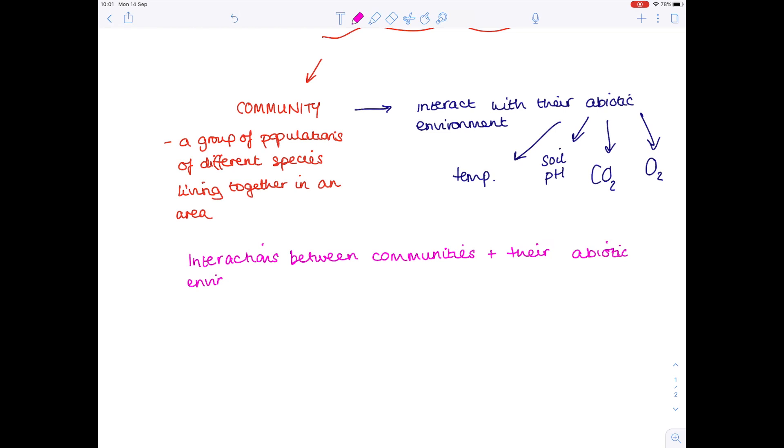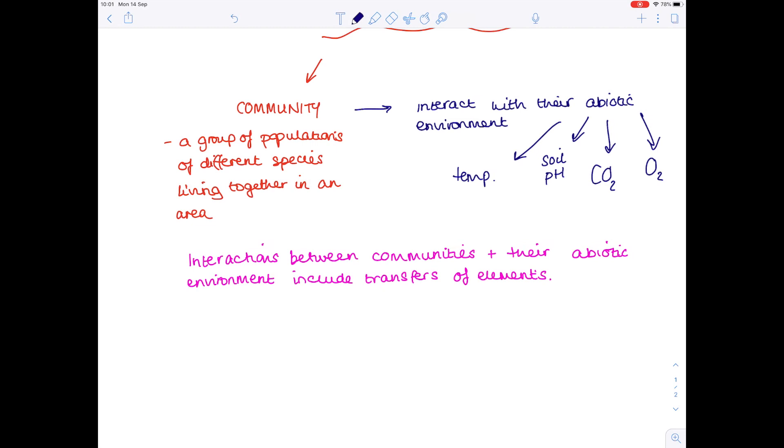Elements are a chemistry term, they feature in the periodic table. If we take the carbon cycle for example, our community would be the plants. They absorb carbon dioxide by photosynthesis. That carbon dioxide is used to build sugars such as glucose. Plants respire meaning that carbon dioxide is released into the atmosphere. Some of those plants are eaten and so the carbon is transferred to animal bodies.